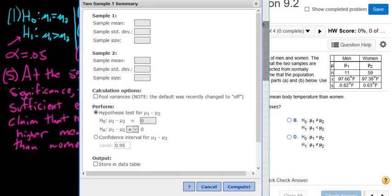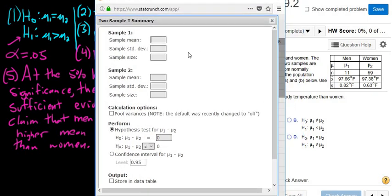Then we enter everything again. I'm just going to find a confidence interval. I'm pretty sure it's going to ask us that at the end. So 97.66 is our sample mean. Our sample standard deviation was 0.82, and our sample size was 11. Sample mean here was 97.38. Sample standard deviation was 0.63, and sample size is 59.